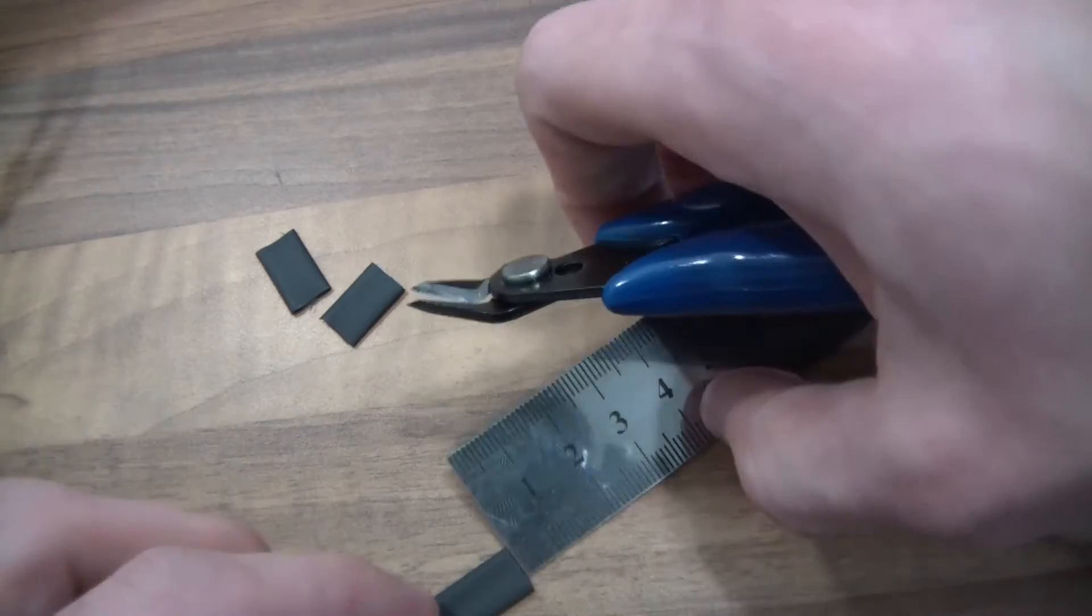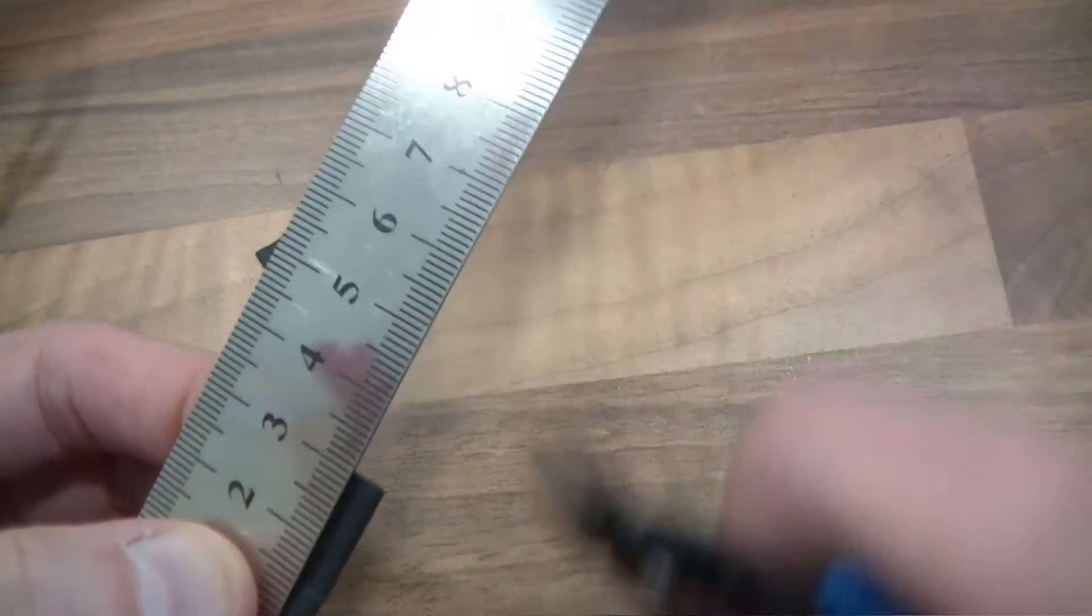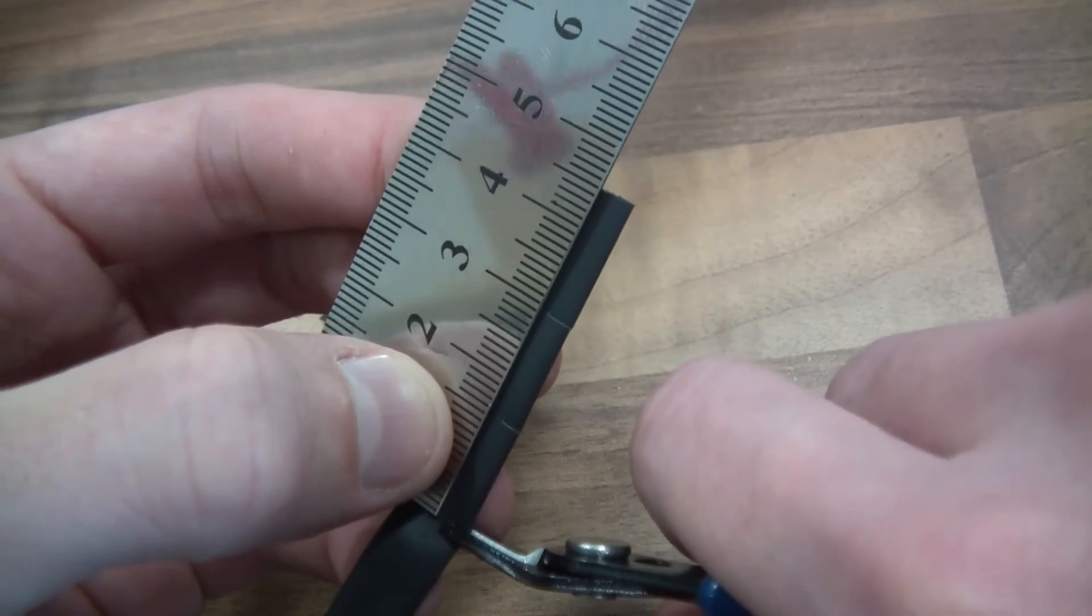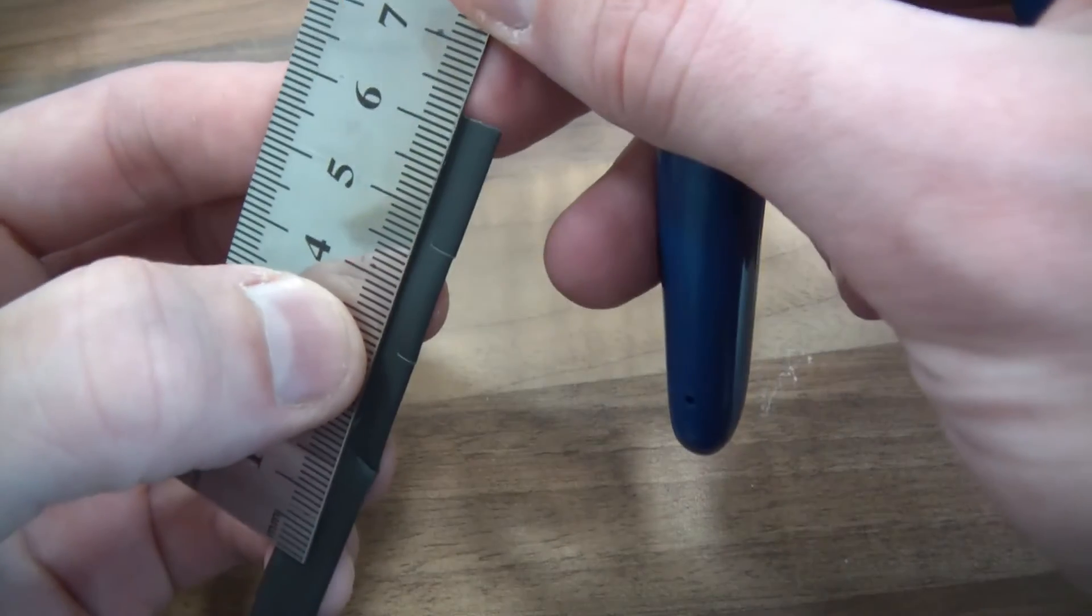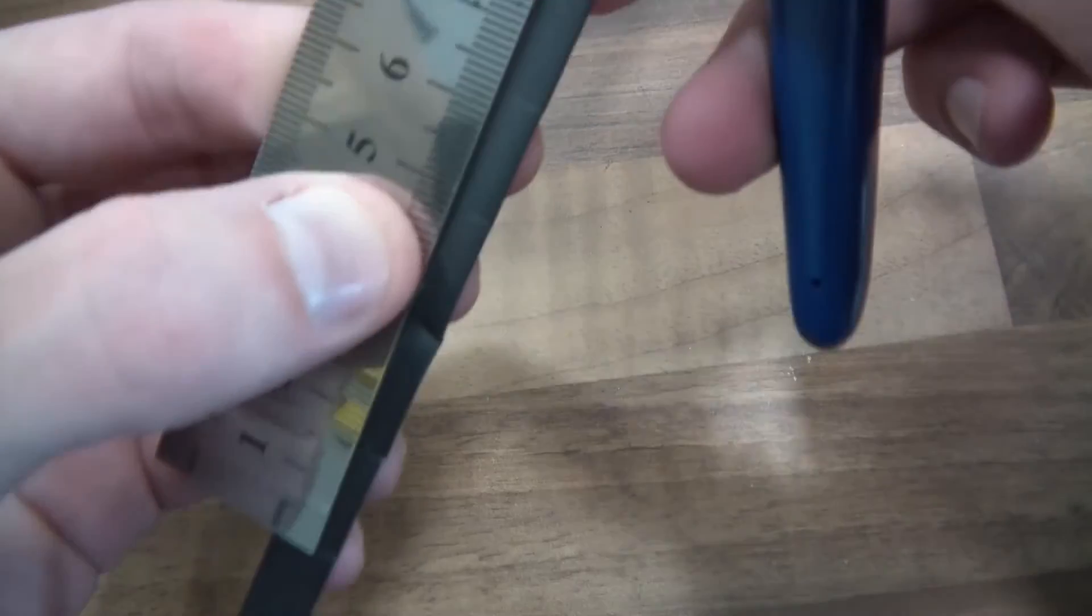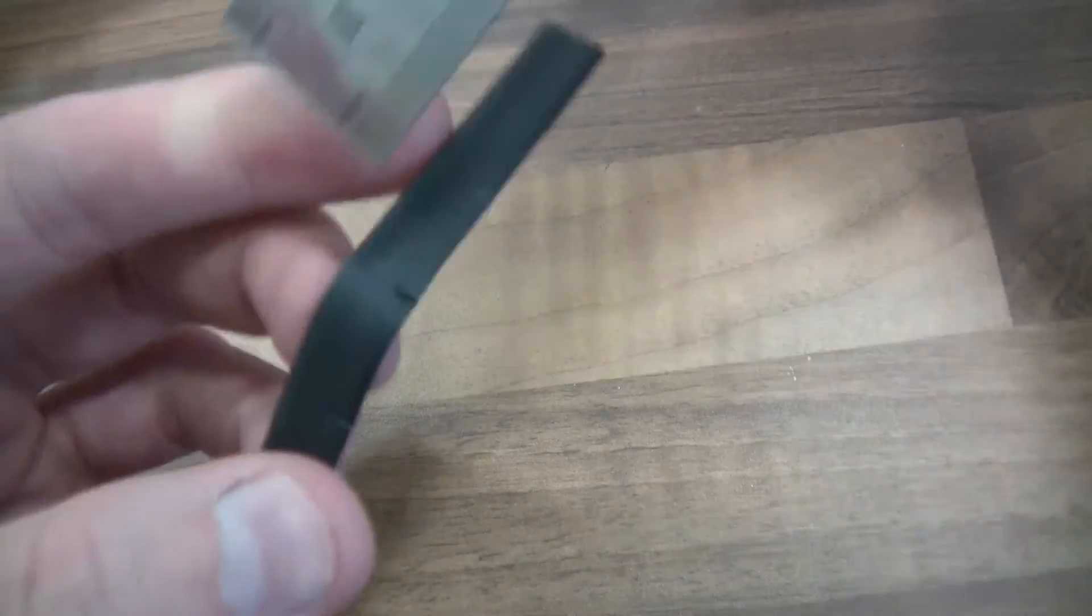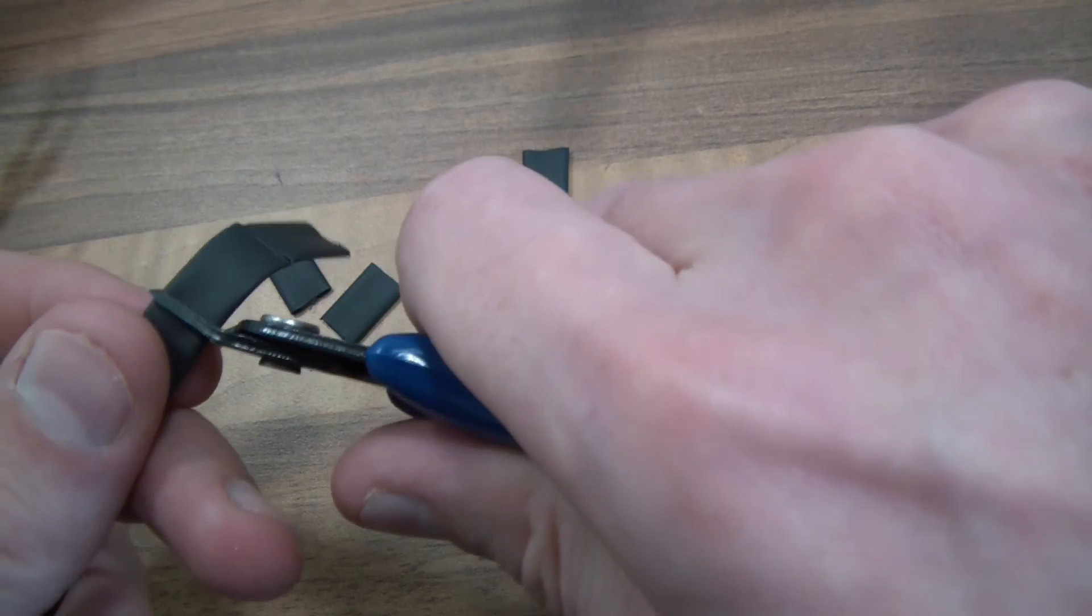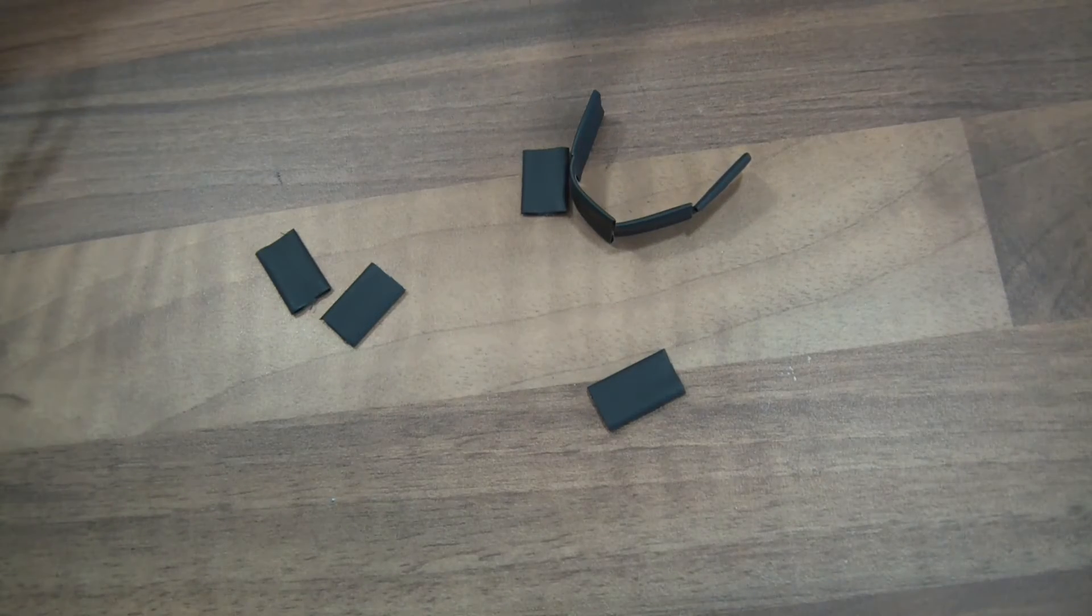So I'm going to just put this ruler up to here and cut at every 15. So 15, 30, 45, 60, 75, 90. Okay, I'll just cut these off now. So I've just put little marks in basically. I'm just going to cut these off.